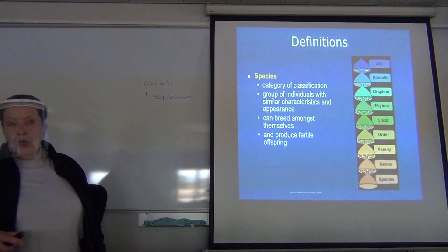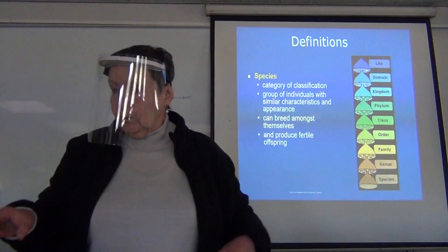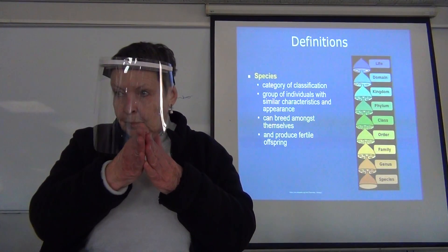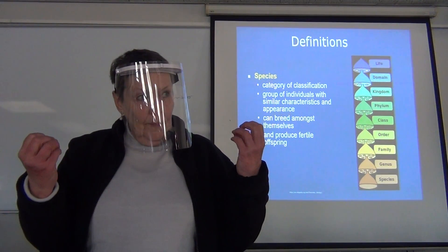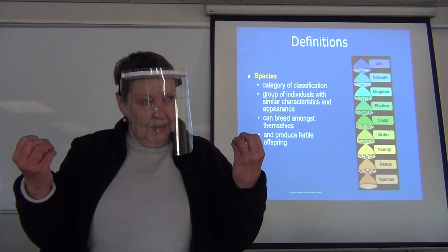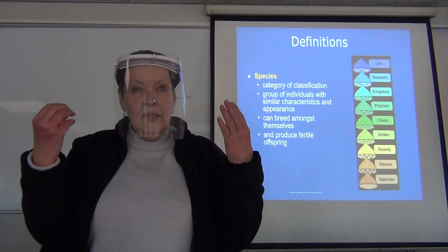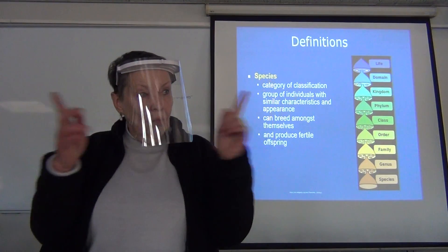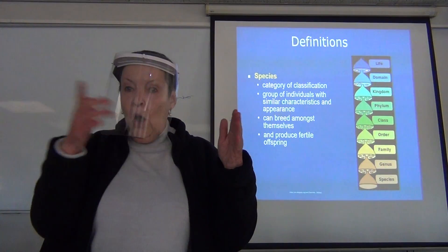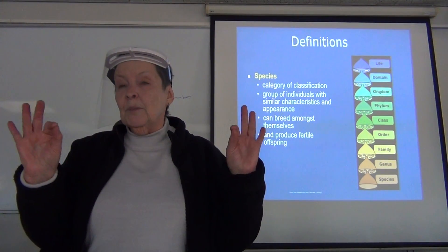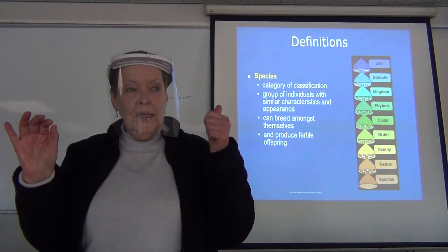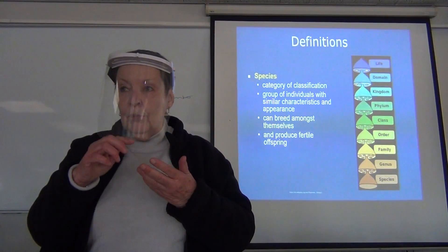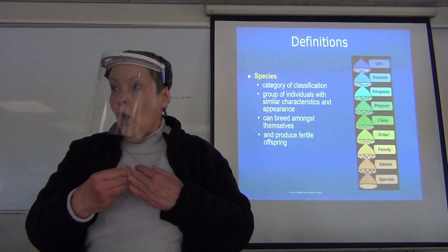Game reserve A and game reserve B, with a fence between them. Impala in A, impala in B. Are they the same population? No — because they can't randomly interbreed due to the fence. Are they the same species? Yes, absolutely — if you put them together, they can breed and produce fertile offspring. That is critical to the definition of a species.